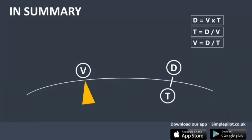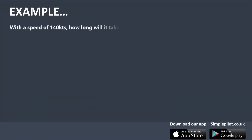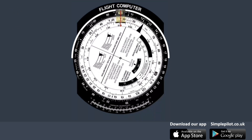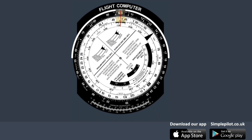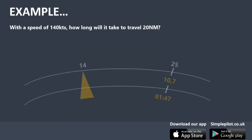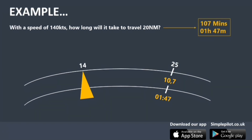Let's look at an example. With a speed of 140 knots, how long will it take to travel 250 nautical miles? To solve this, align the speed index with the current speed of 140 knots — that is, the number 14 on the outer scale. Then look for the distance of 250 miles, represented by the number 25 on the outer scale. Read the corresponding time in minutes on the middle scale or in hours on the inner scale. The results are 107 on the middle scale and 147 on the inner scale, interpreted as 107 minutes or, alternatively, 1 hour and 47 minutes.